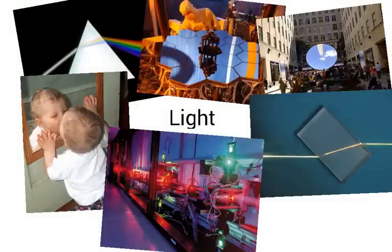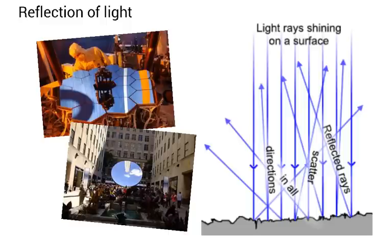Hi guys, today we're talking about light, reflection, refraction and the thin converging lens. Mirrors are used in everyday life. In the top picture you can see an example of a mirror being prepared for a scientific experiment. In the bottom picture you can see a mirror that was used in an art exhibition.